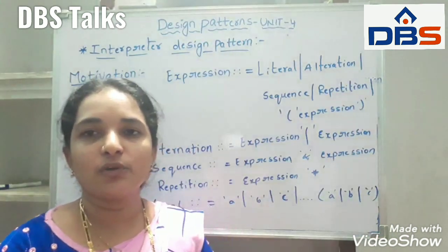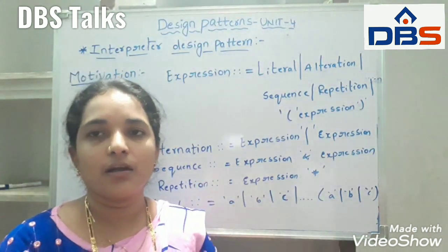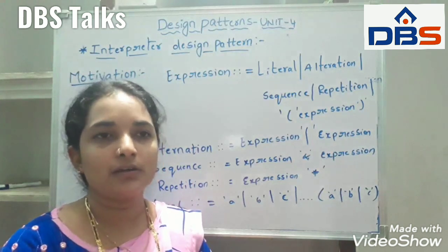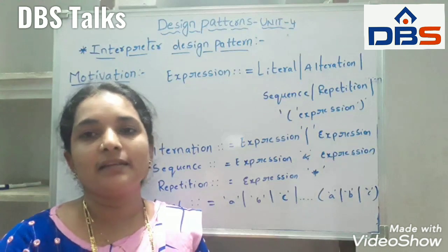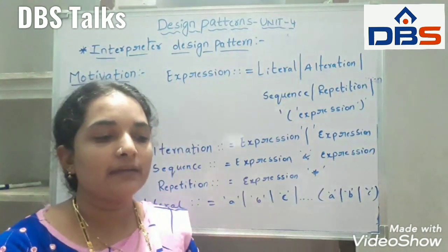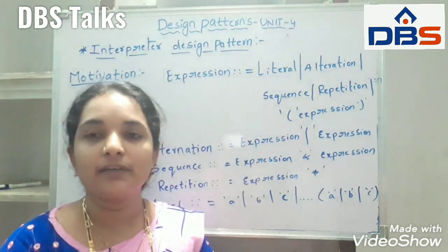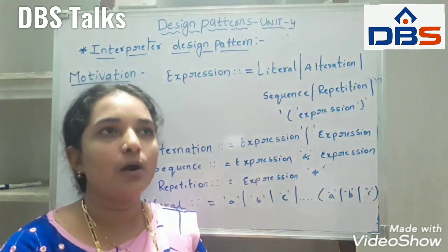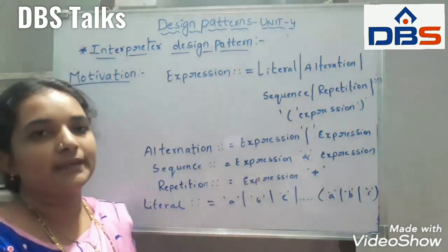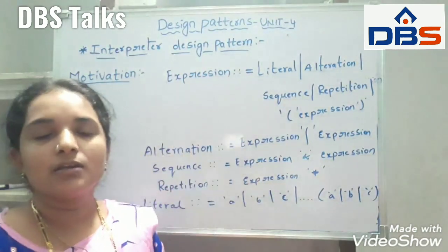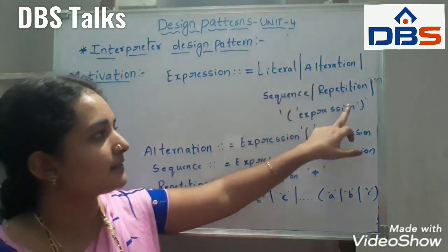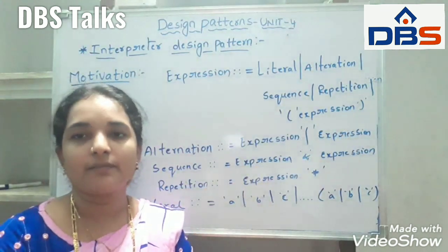Now coming to motivation. In this motivation, we are having some regular expressions. We use the interpreter pattern to describe how to define a grammar for simple languages. It represents a sentence in a language and interprets those sentences. For example, the pattern describes how to define a grammar for regular expressions, how to represent a particular regular expression, and how to interpret it. The regular expression is an abstract class and we are having some subclasses: literal, alternation, sequence, repetition, and expression.